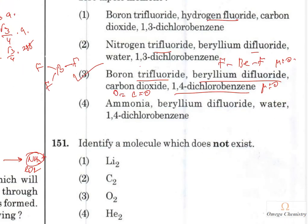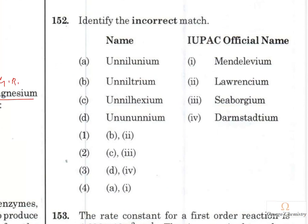Question 151: He₂ does not exist because its bond order is zero. Question 152 (identify the incorrect match of IUPAC names): Un-nil-unnium = 101 (Mendelevium, correct); un-nil-trium = 103 (Lawrencium, correct); un-nil-hexium = 106 (Seaborgium, correct); but un-un-unnium = 111 is not Darmstadtium — it is Roentgenium. So option D is the incorrect match and is the right answer.